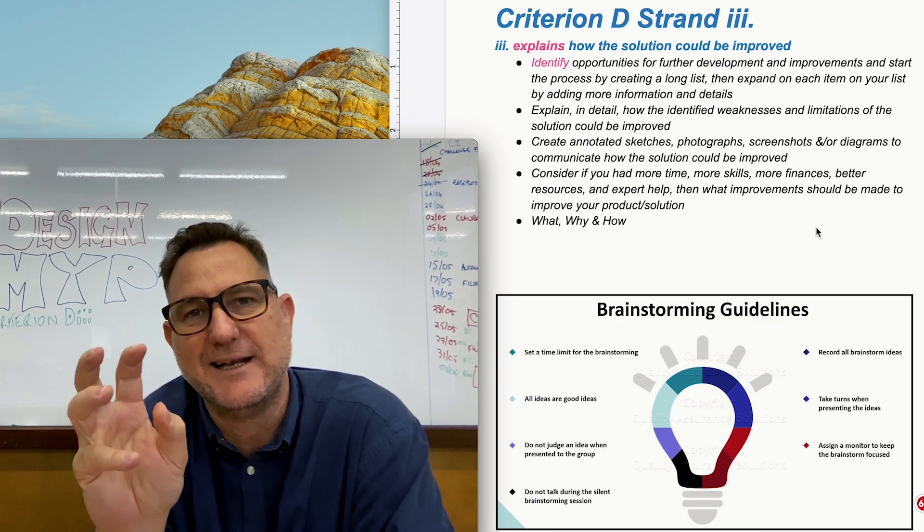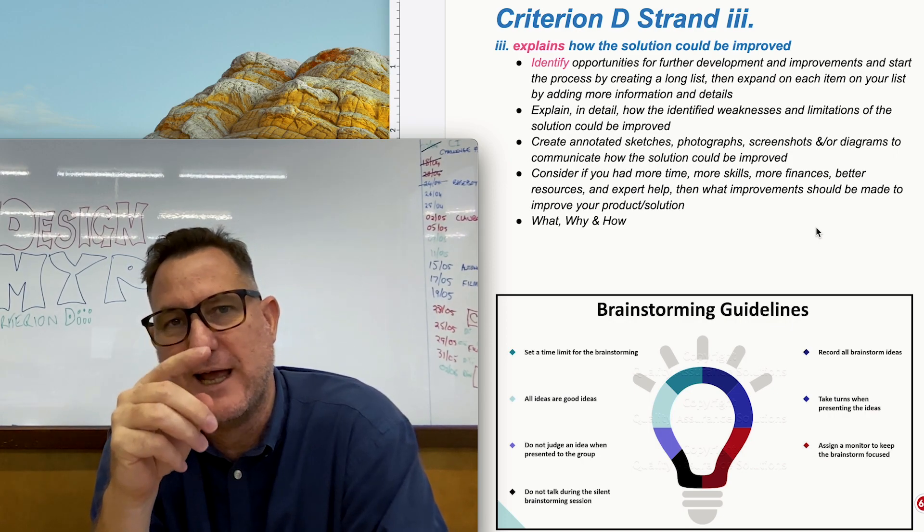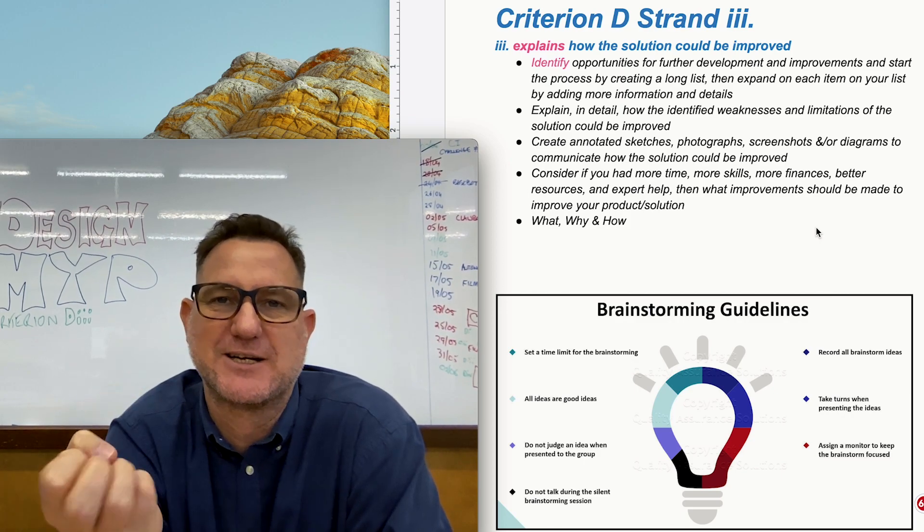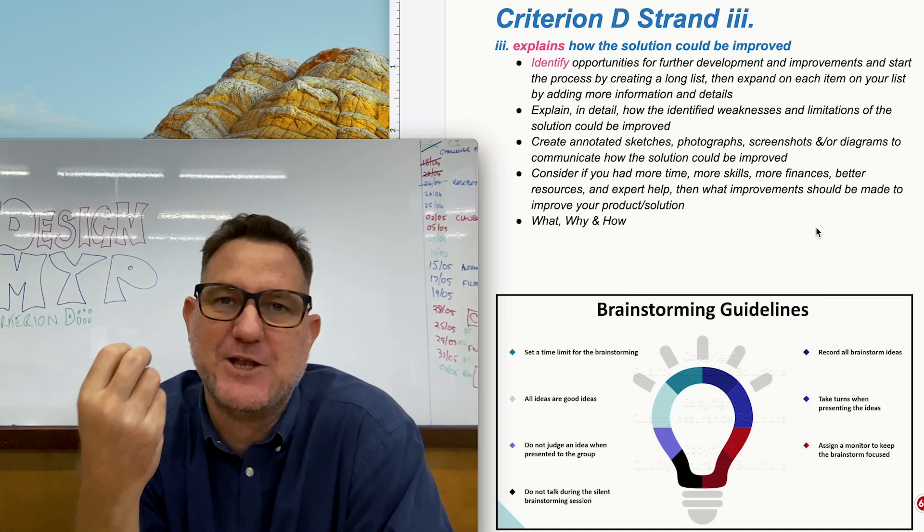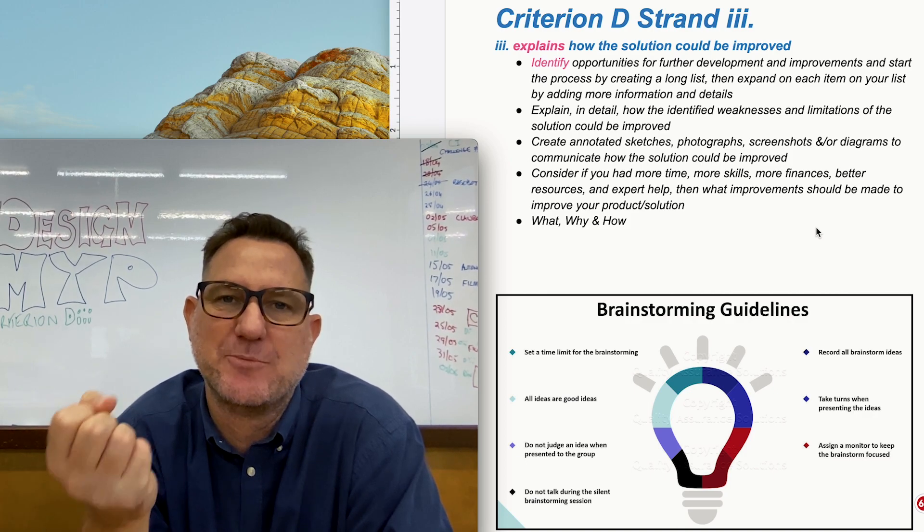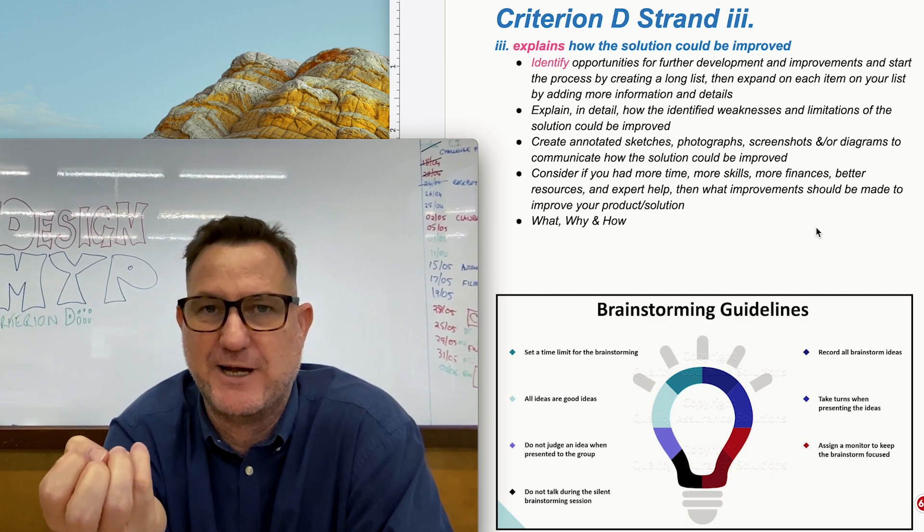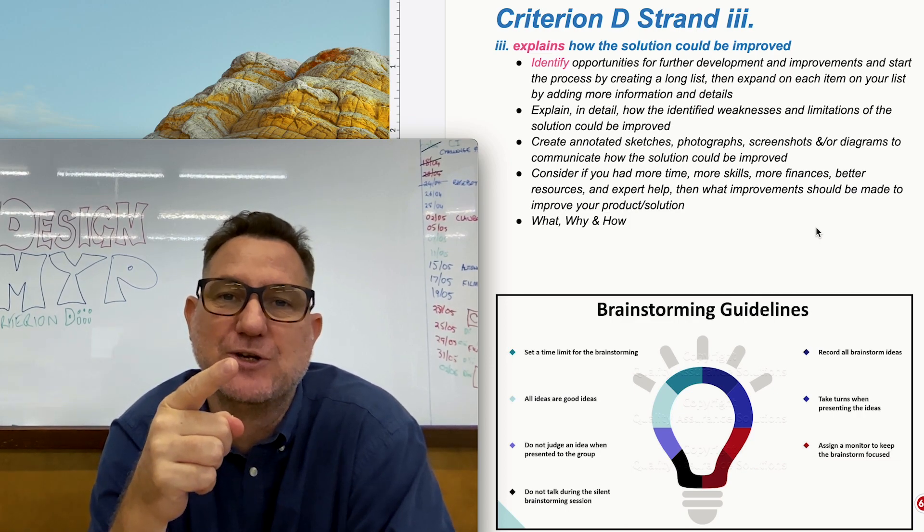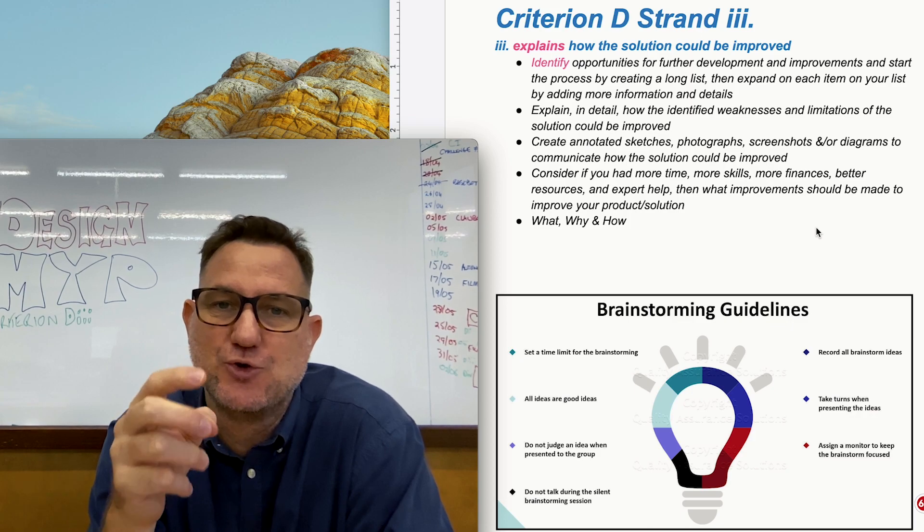Now this actually could be directly linked to strand 1 and the results strand 2, because what's happened, you've just conducted some tests about your product and you've probably discovered some of the problems with your product.